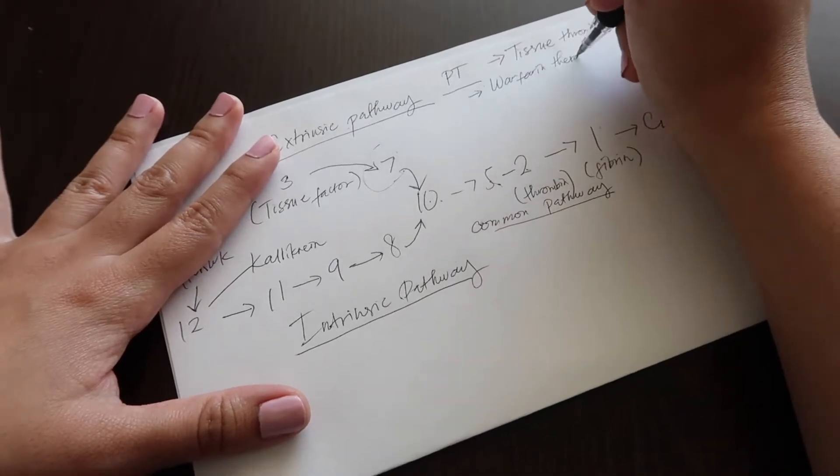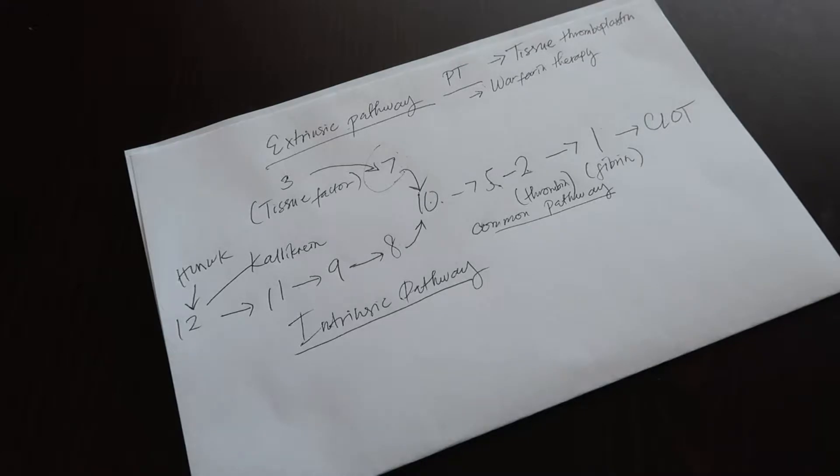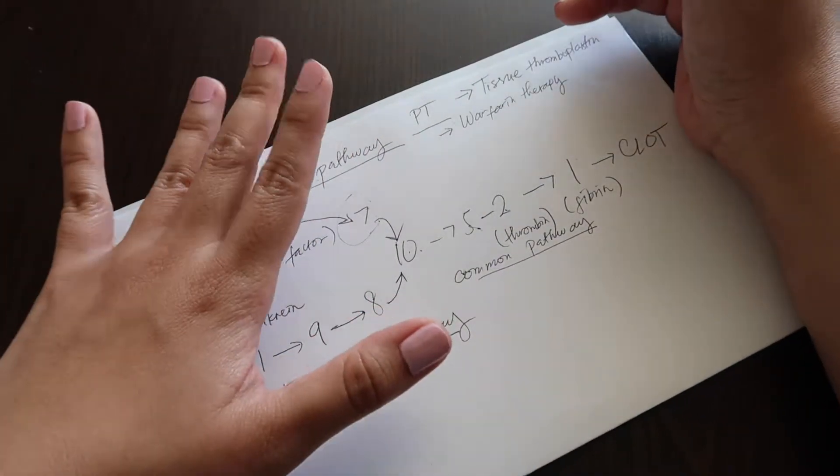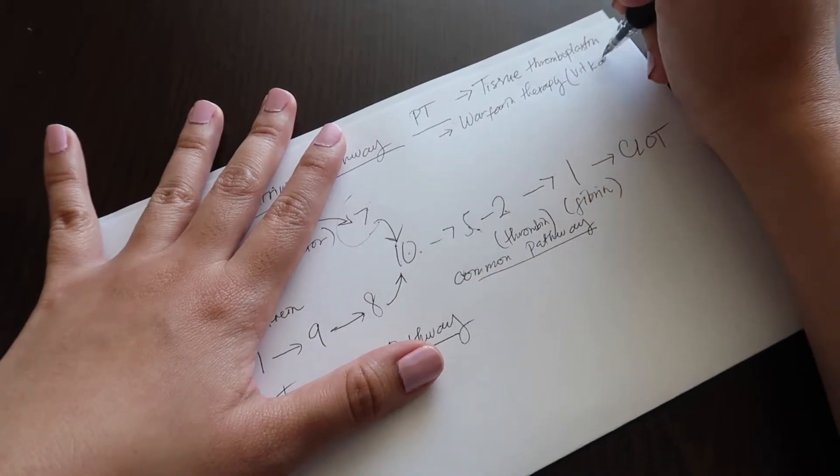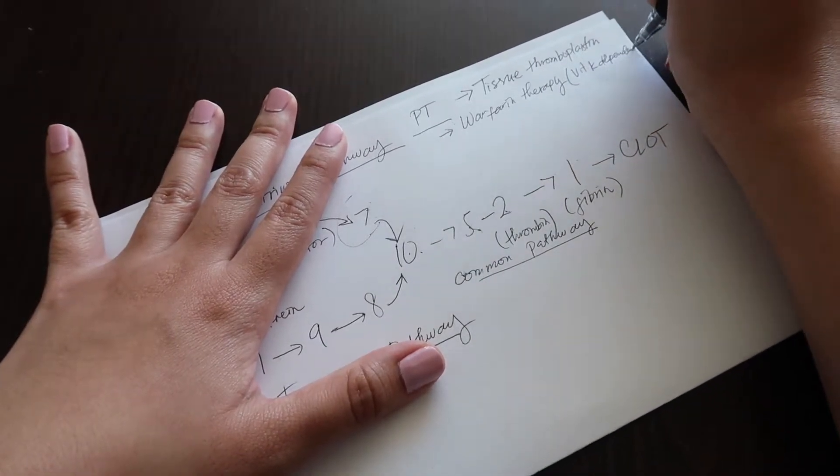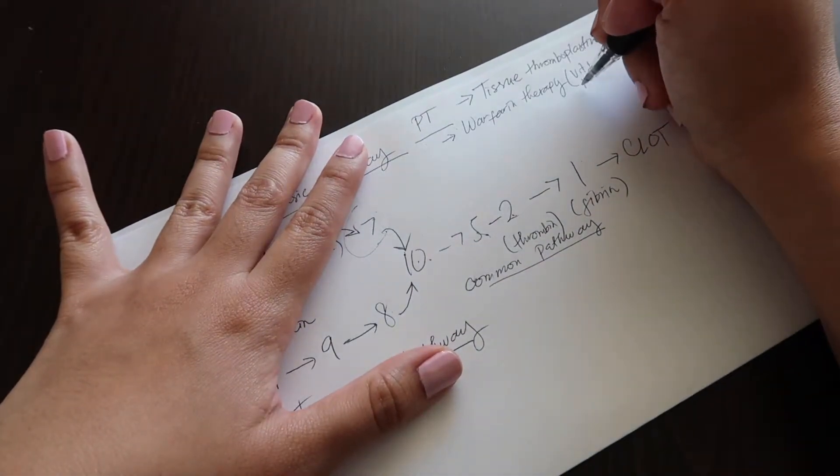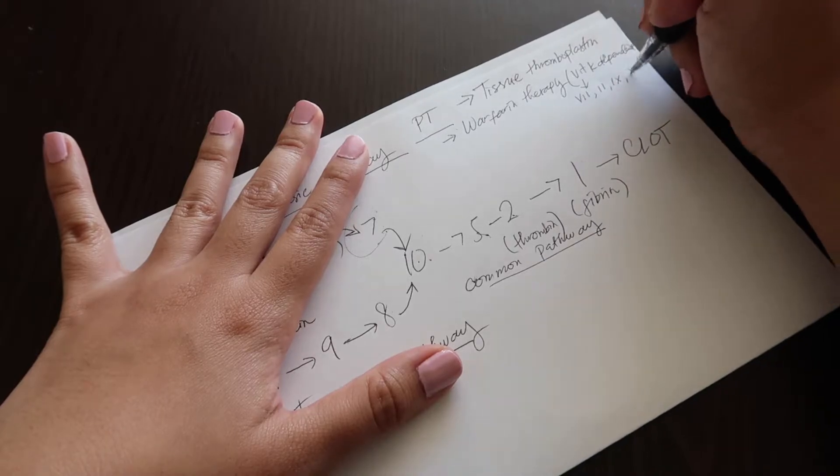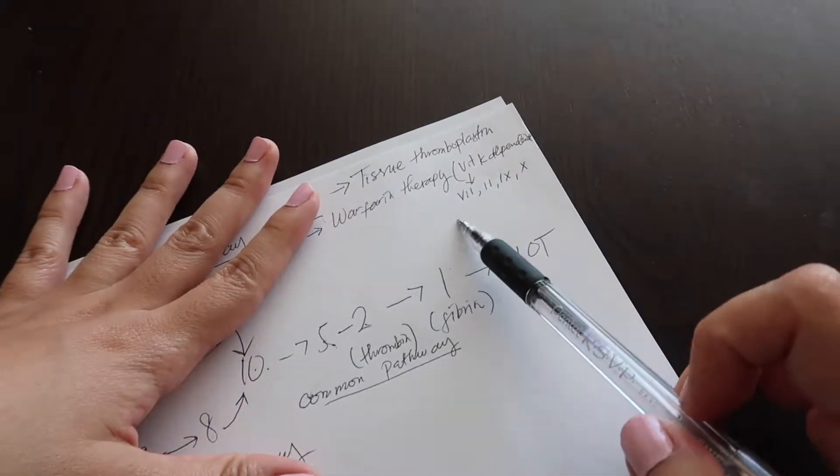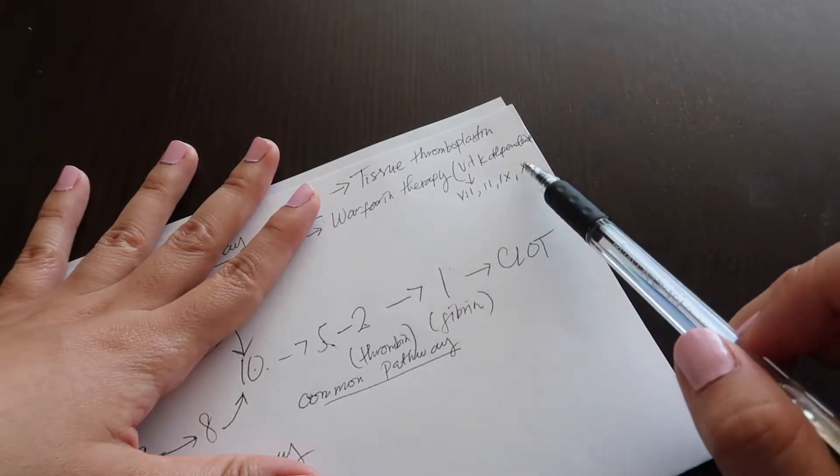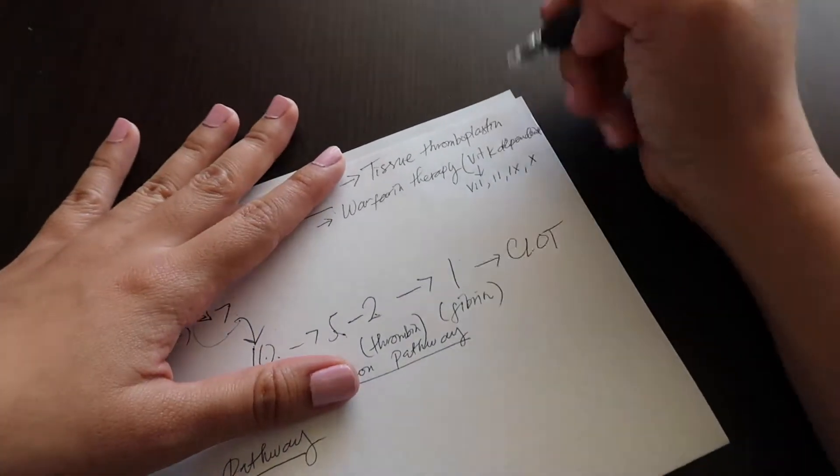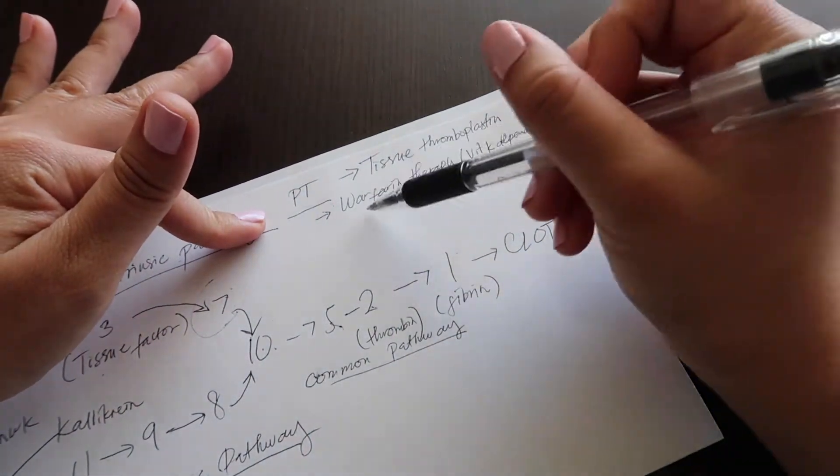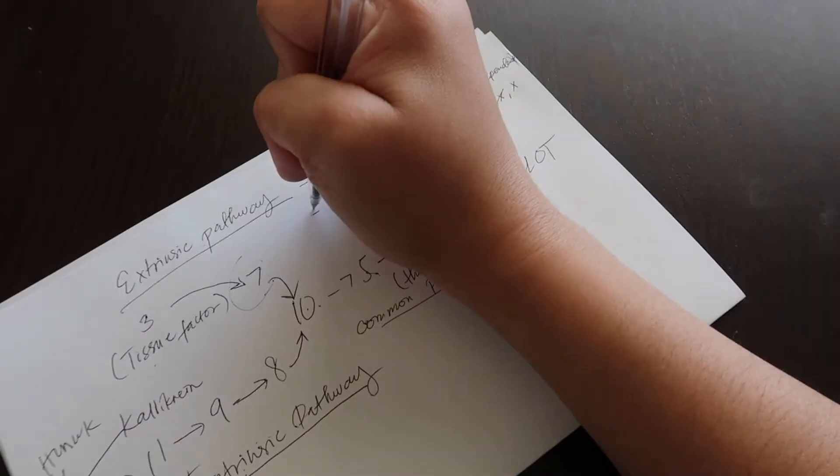It is also used to monitor warfarin therapy. Some books also say coumadin. Warfarin therapy messes up your vitamin K-dependent factors. What are these? You write seven, you have two and another here nine, and then ten. If you write it in Roman numerals, it's easier to remember because you got seven and you write another two lines there, and then a third line, and then X. Don't worry about nine too much because nine is on the intrinsic pathway. For warfarin therapy, what it really messes up is the 7, 2, and 10.